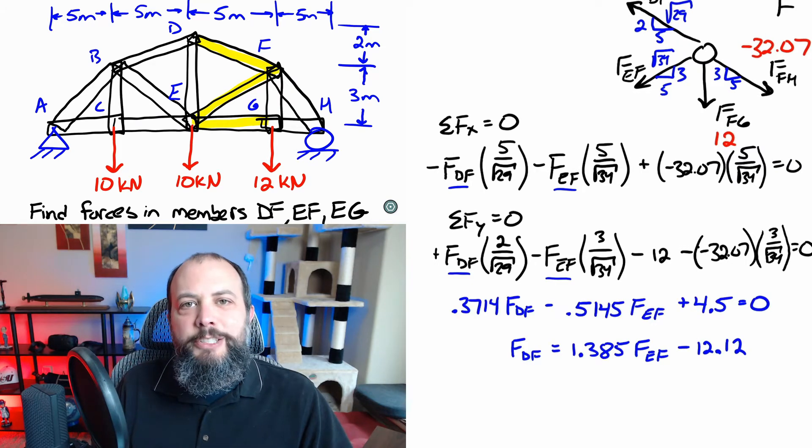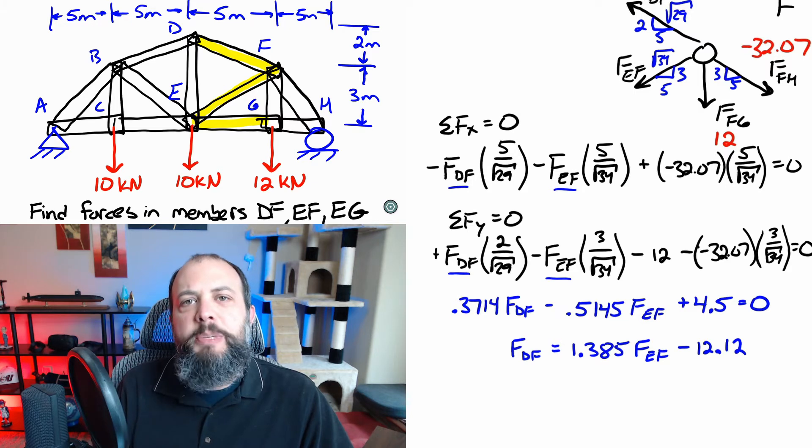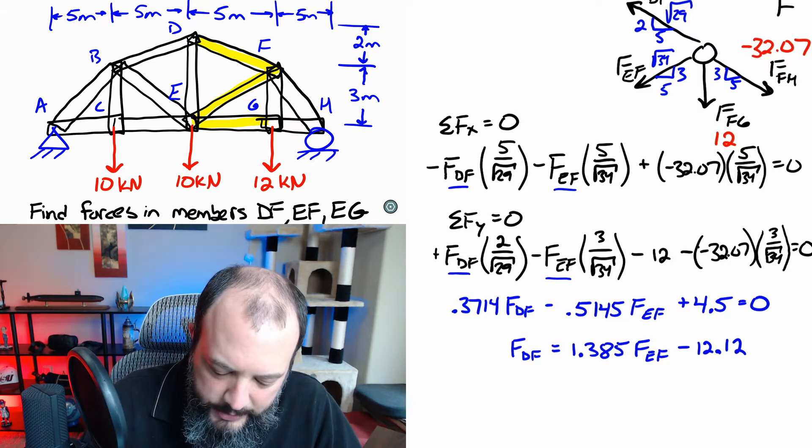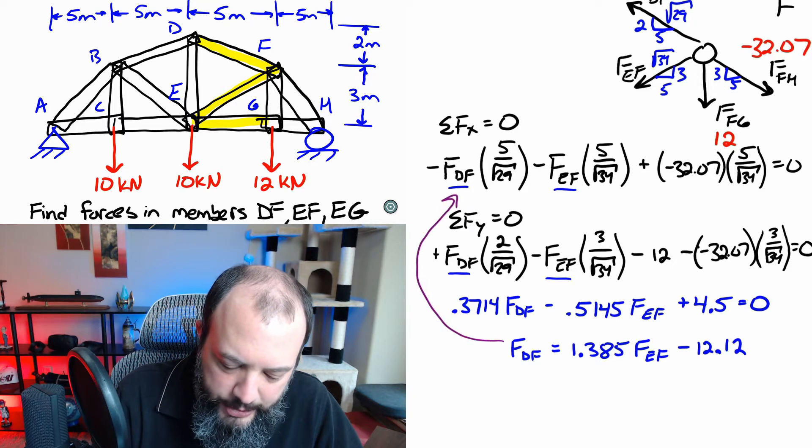So changing the fractions into decimals makes this y direction equation look a little bit simpler when I isolate for FDF. Then I'm going to take that term and plug it back into the x direction equation.